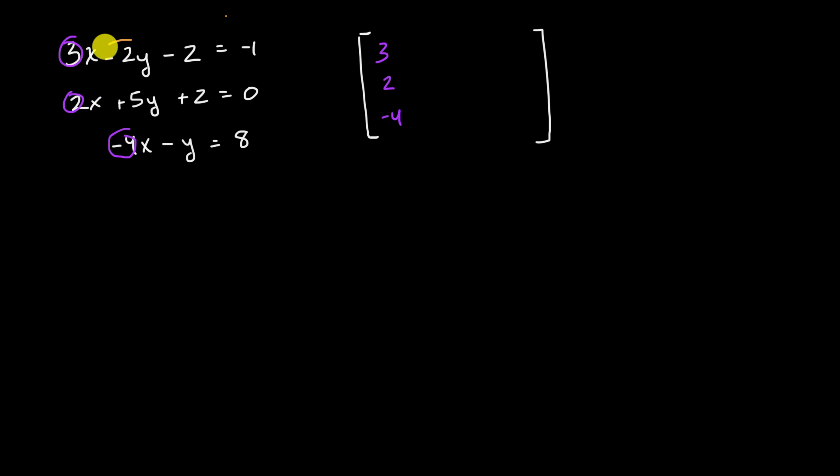Let me get all the Y coefficients. Negative two, five, and essentially a negative one. Negative two, five, and a negative one. And then last but not least, all the coefficients on the Zs.